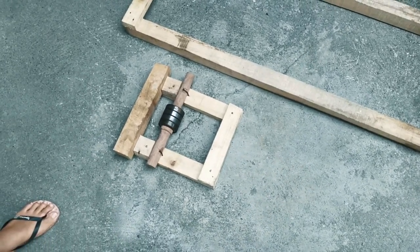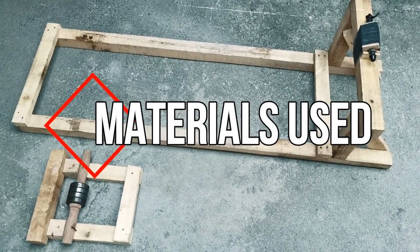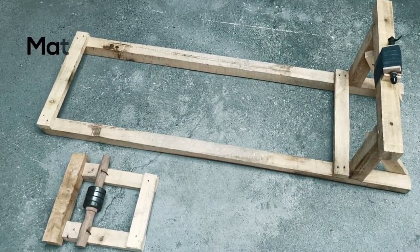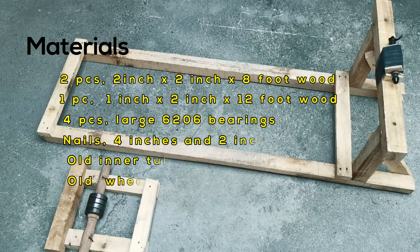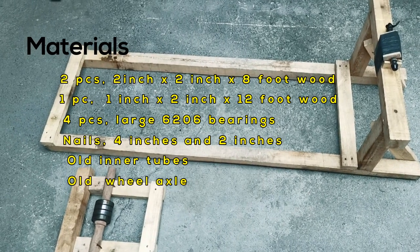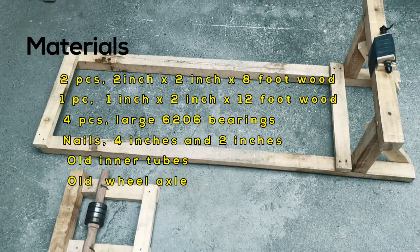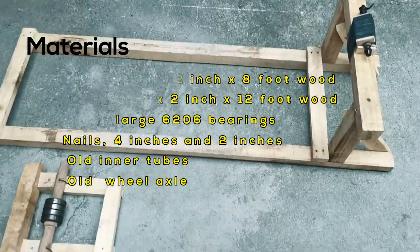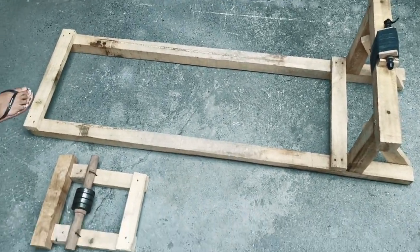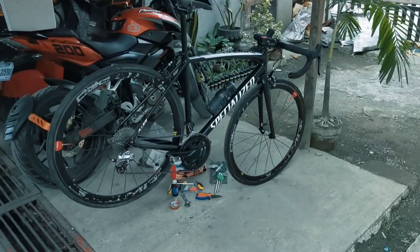So what are the materials needed? For this DIY bike trainer, I have used two pieces of 2x2x8 wood and one piece of 1x2x8. Okay, so first step, of course, is to measure your bike. So my base bike for this one is a road bike.